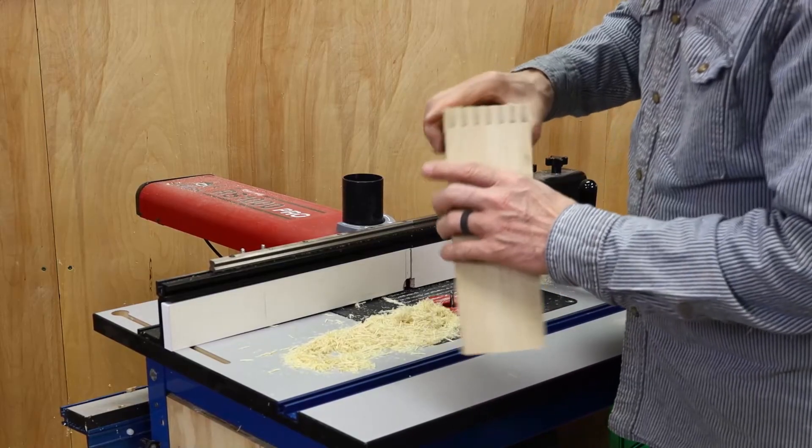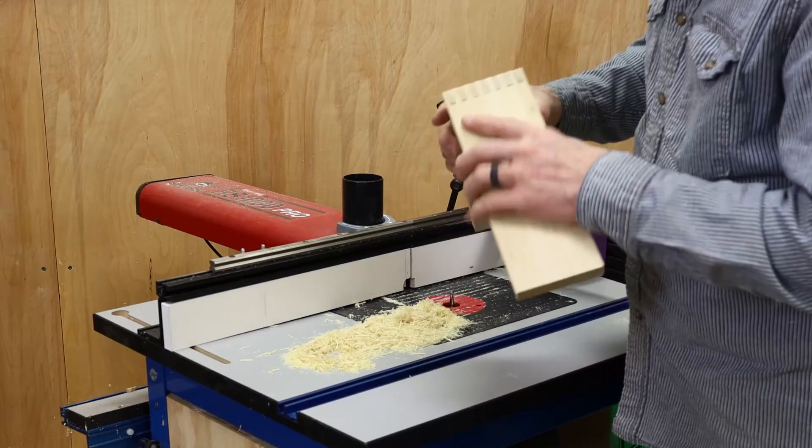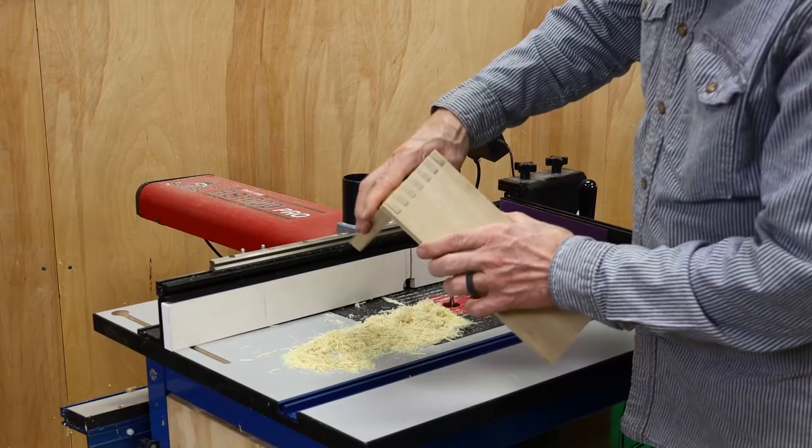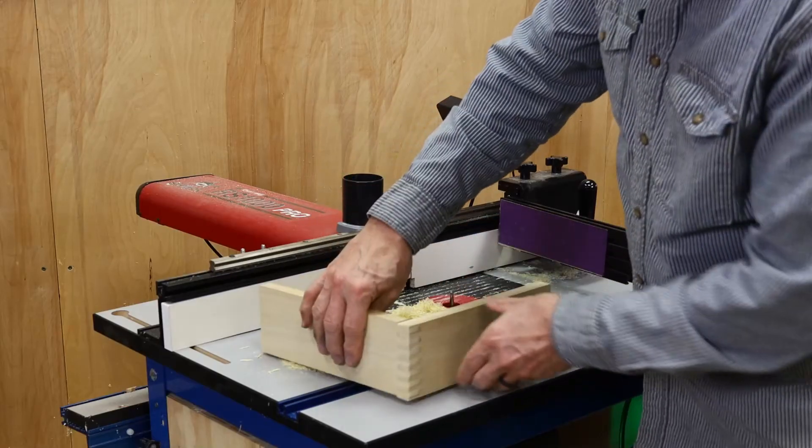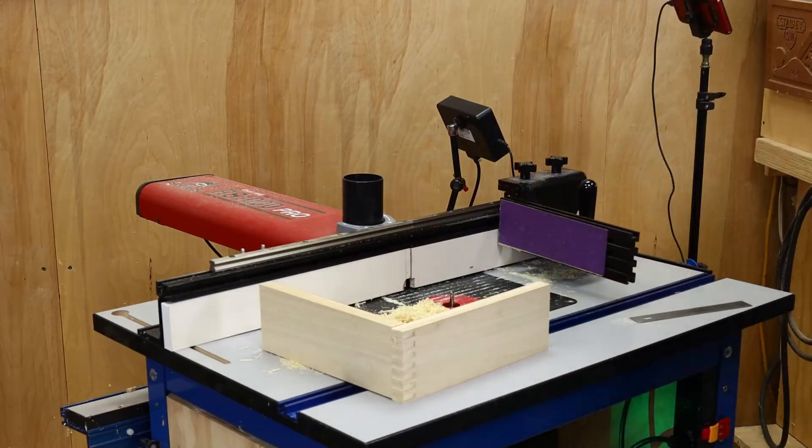A couple of things to keep in mind when you're using the box joint app. One, it's important that the ends of your boards are cut square and sit flat on the table. And two, it's critical that your router fence and miter gauge run square with each other and with the table. Of course, this applies to almost all the apps. So don't hesitate to add some shims to the fence or miter gauge to make sure they run true.